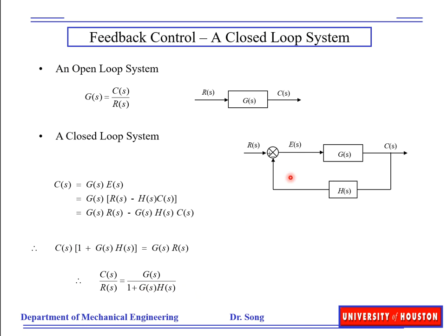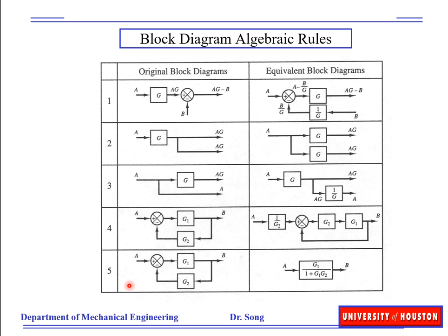If H(s) equals 1, then the formula simplifies to G(s) over 1 plus G(s). To derive this, C(s) = E(s)·G(s), and E(s) = R(s) − H·C(s). By the definition of transfer function — output Laplace transform over input Laplace transform — we arrive at that format. These are the basic block diagram algebraic rules, which you have learned in 33-38, used to simplify or manipulate block diagrams.